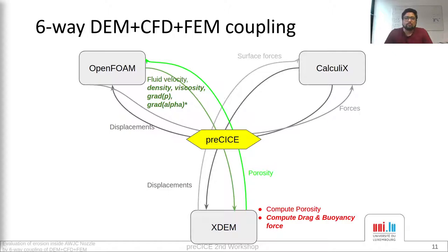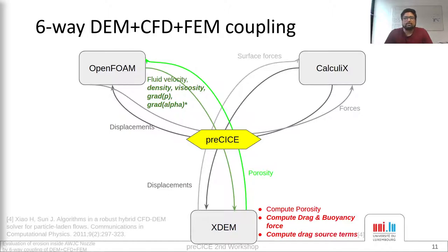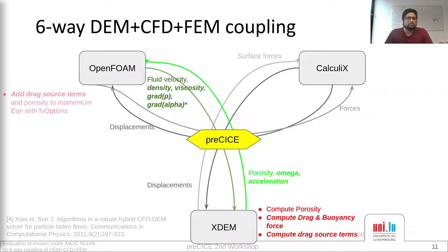For multi-phase flow, the porosity is not enough to model the particles in the fluid. So I had to introduce an explicit and implicit drag source term, which are computed by XTM and then transferred as volume fields — omega and acceleration — which are also injected through FV options.